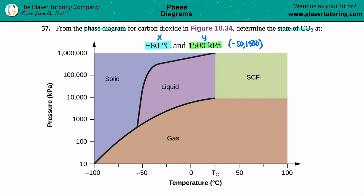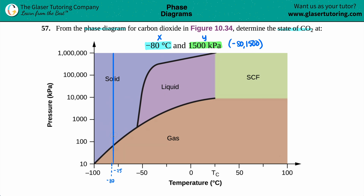Starting with temperature, we look for negative 80 on the x-axis. It has to be between negative 50 and negative 100, and the midpoint is negative 75, so negative 80 is a little further past that. We'll estimate its position and draw a straight line up to mark all conditions at negative 80 degrees Celsius.